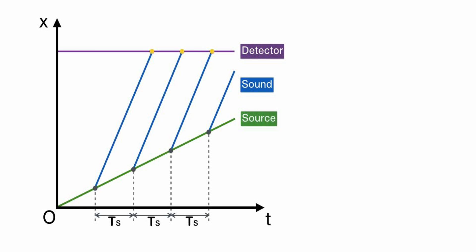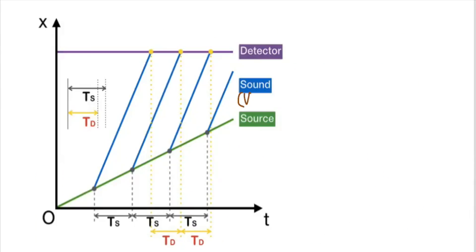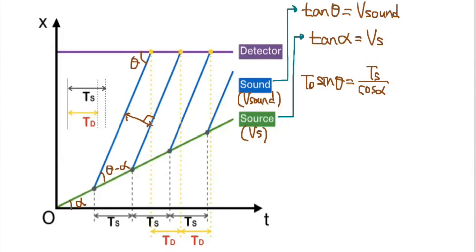The detector hears the reached sounds. The detected interval of reached sound is the detected period Td. Td is shorter than Ts and the detected frequency is getting larger — higher pitch in hertz. Let's calculate the effect, calling the velocity of sound Vs. From the graph we find the following relationship between Ts and Td. The key point is that the perpendicular width between the adjacent trajectories of sound can be figured out from Ts or Td.